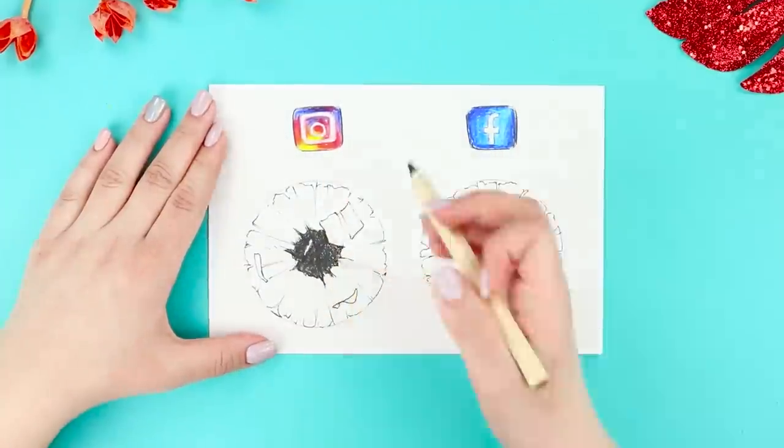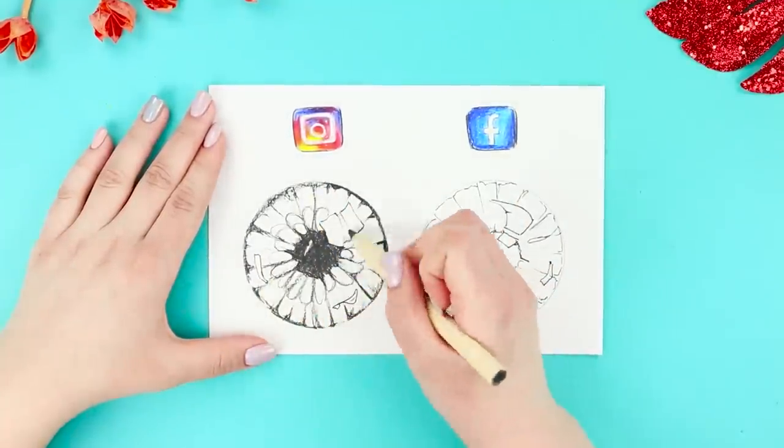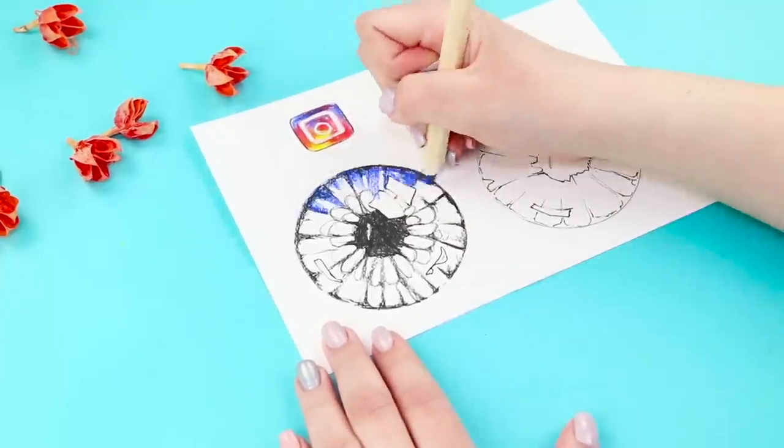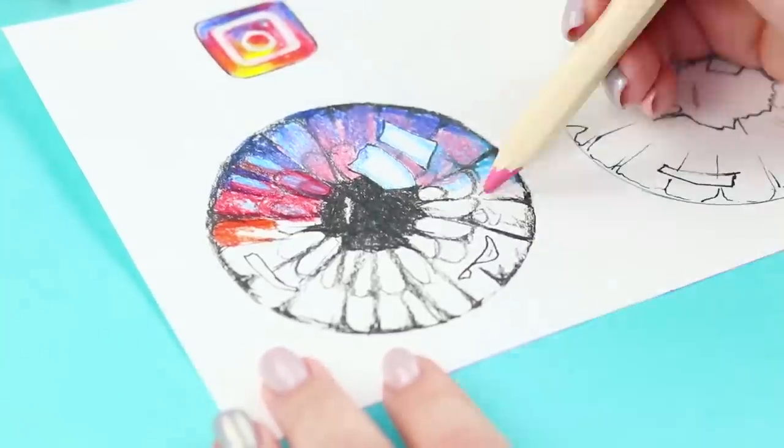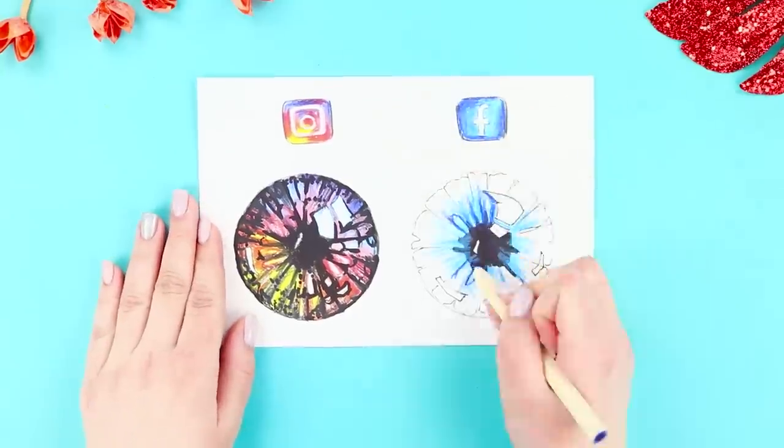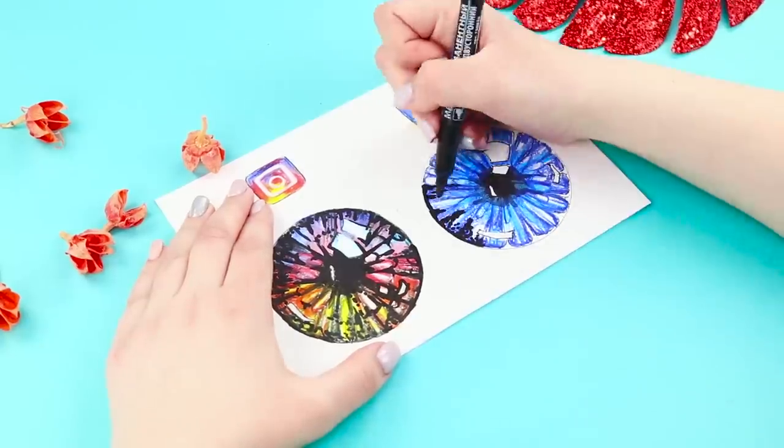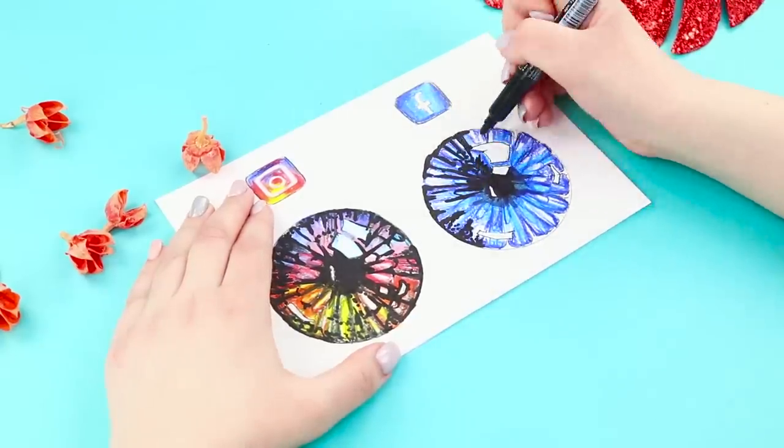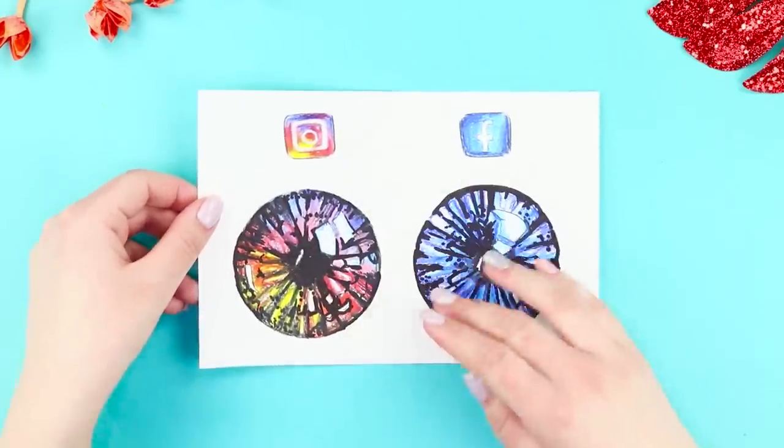When the drawings are ready, start to color them. Make the pupils dark. Also, shade the eyes along the outline. Paint the rest of the space in the color of the applications. For Instagram, it's colorful with smooth transitions from blue to pink, yellow and red. For Facebook, it's sky blue. When you're done painting the eyes, highlight the details and go over the outlines with a black permanent marker. Big Brother is watching you! Don't forget!